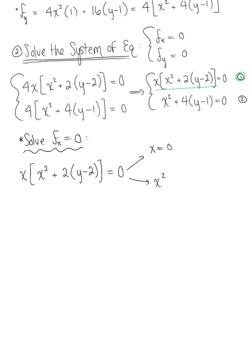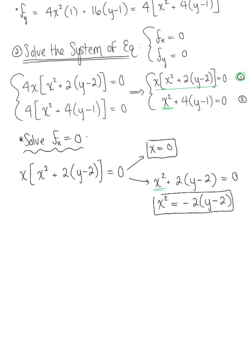We have x squared plus 2 times (y minus 2) equals 0 as our second case. We can box up x equals 0 and substitute that into our second equation. For the second case, since I see x squared appearing in both equations, I'll solve for x squared: x squared equals negative 2 multiplied by (y minus 2).